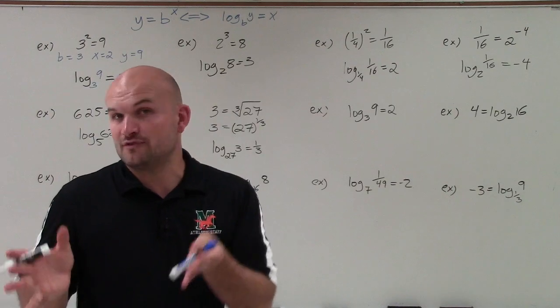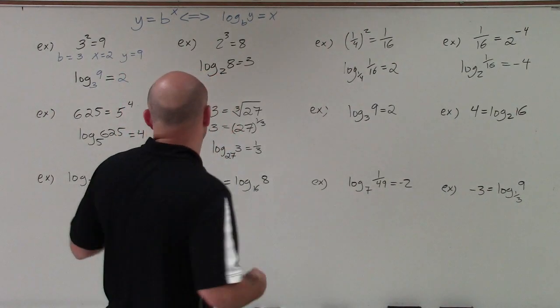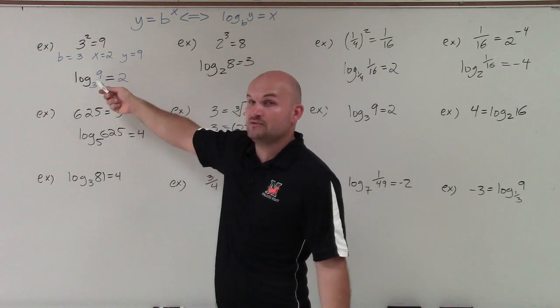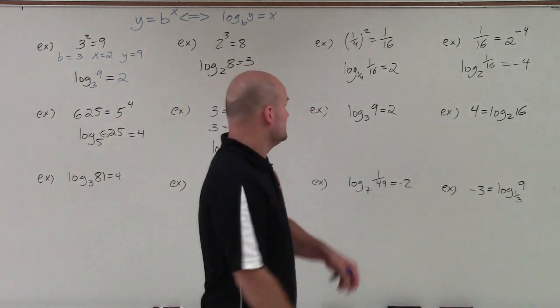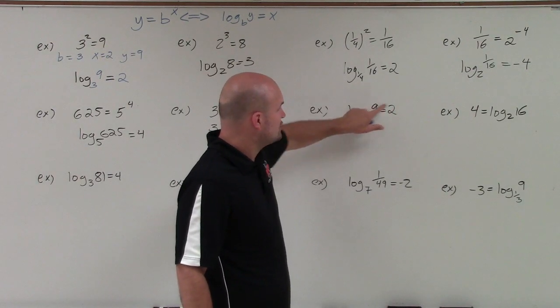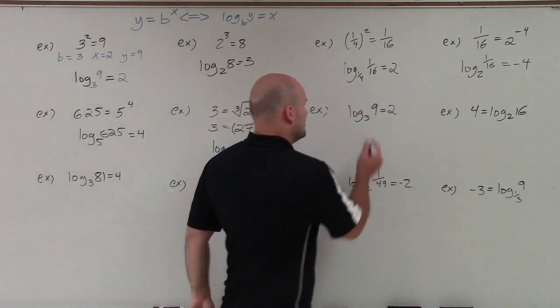So now what we're going to be doing is converting back, going from exponential to logarithmic. Now what we're going to do is go from logarithmic to exponential. And remember what I spoke about. You know, a logarithm is 3 raised to what power gives you your value 9? Well, that answer is 2. So we know this is going to be 3 squared equals 9.